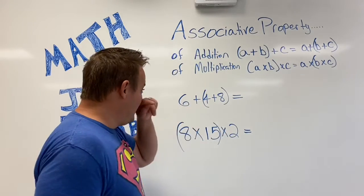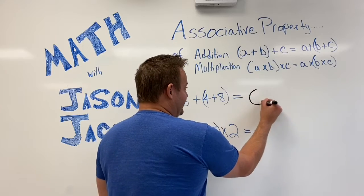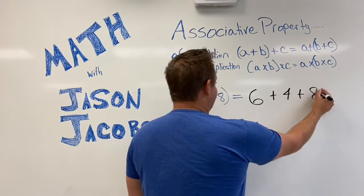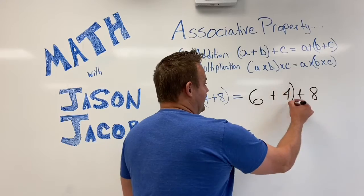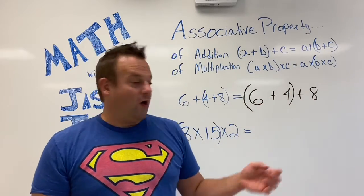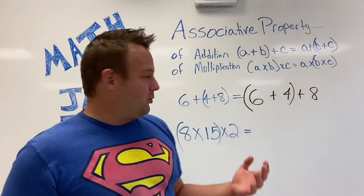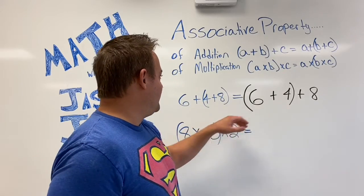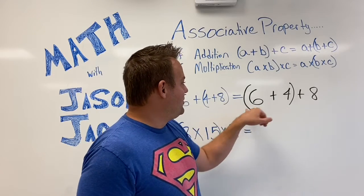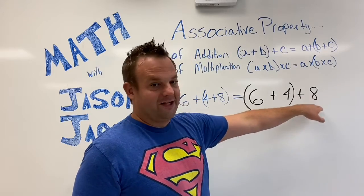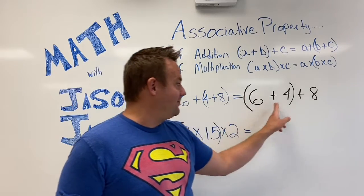So if we have six plus the quantity four plus eight — as long as it's all addition, which it is — we keep the addends in the exact same order and we are allowed to move the parentheses. You might say, why would I want to do that? Well, this is a 10 pair, so tens are a lot easier. Instead of six plus 12, which might be harder with complicated numbers, you can make a 10 pair: six plus four is 10, plus eight. These two expressions are equal — six plus 12 is the same as 10 plus eight. They're both 18.